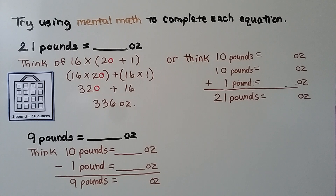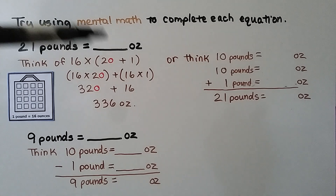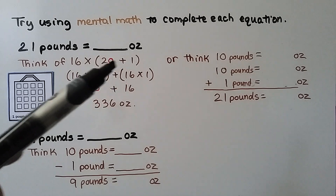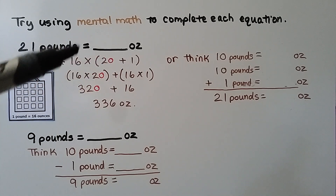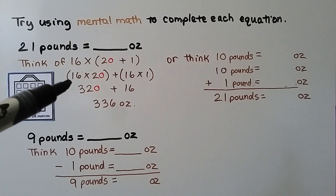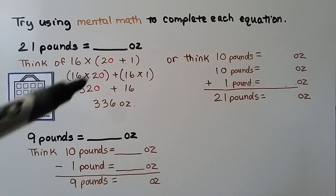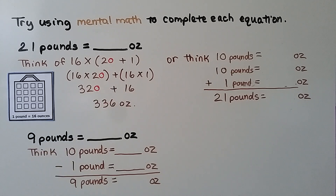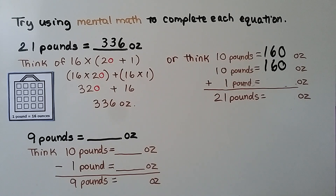Let's use mental math to complete each equation. Twenty-one pounds equals how many ounces? We think of sixteen times twenty-one as sixteen times twenty plus sixteen times one, using the distributive property. Sixteen times twenty equals three hundred twenty, and sixteen times one equals sixteen. Adding them together gives three hundred thirty-six ounces. Alternatively, ten pounds is one hundred sixty, plus ten more is another one hundred sixty, plus one pound is sixteen, totaling three hundred thirty-six ounces.